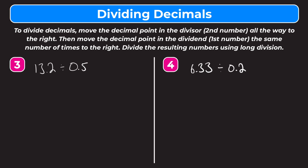We have thirteen and two-tenths divided by five-tenths. Let's rewrite this as a long division problem. We have thirteen and two-tenths under the bar divided by five-tenths outside. First we have to make the divisor a whole number by moving the decimal point over one, so it becomes five. We have to move the decimal in the dividend over one as well, so this becomes one hundred and thirty-two. Let's rewrite that without the arrows — one hundred and thirty-two under the bar divided by five.